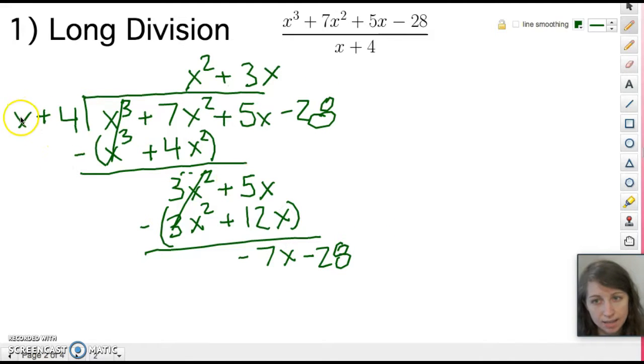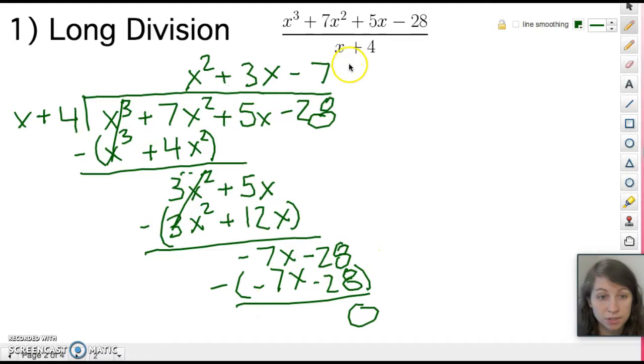All right, x times what equals negative 7x? That would be a minus 7. Minus 7 times x is minus 7x. Minus 7 times 4 is minus 28. When we subtract this it's going to cancel itself out. We have 0 so our remainder is 0 so this goes in exactly with no remainder and our answer is x² + 3x - 7.